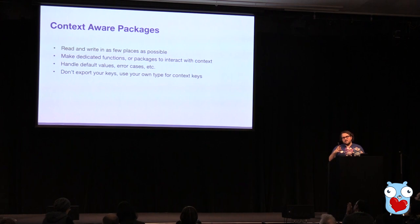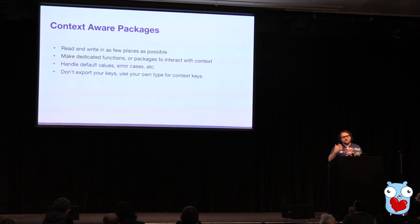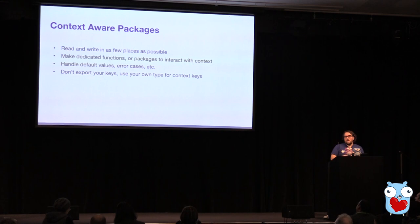So the answer is generally to read and write from a context in as few places as possible. Make dedicated functions to interact with the context, and in those places you can handle default values and error cases. Usually we are making independent packages. The cases where we found it valuable are generally tracing and observability situations, and there it makes sense to be its own package so we can leverage it across different microservices. One way you can make sure you're using those functions is to simply not export your keys. If you have a custom type for your keys and you don't export those keys, it's impossible for anything else to overwrite your value or access it outside of your dedicated functions.